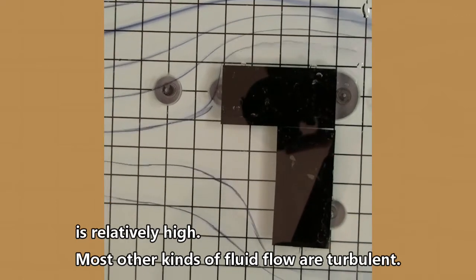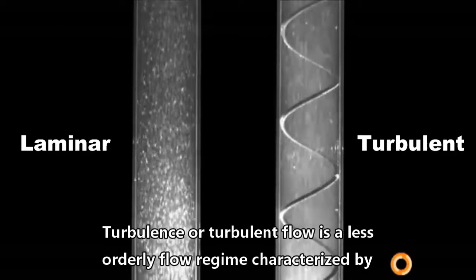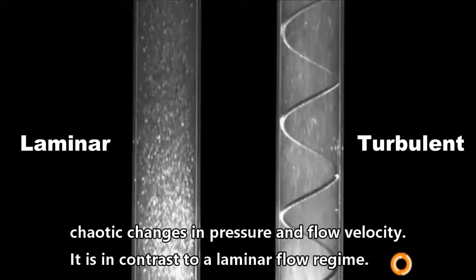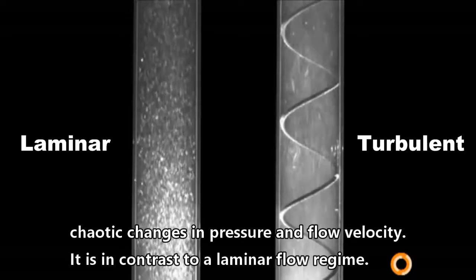Most other kinds of fluid flow are turbulent. Turbulence, or turbulent flow, is a less orderly flow regime characterized by chaotic changes in pressure and flow velocity, in contrast to laminar flow regime.